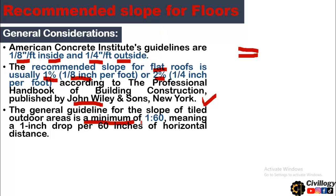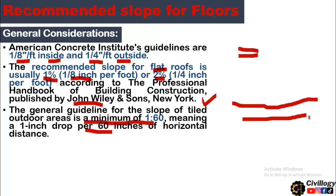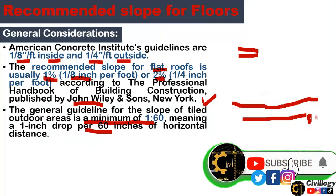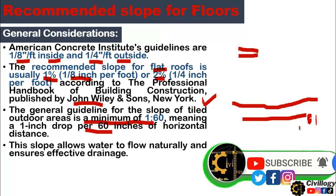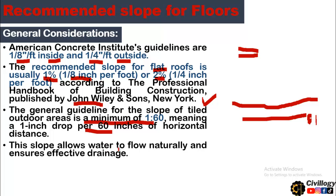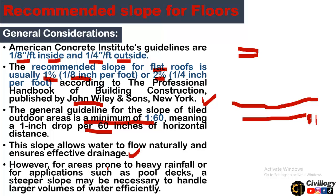A ratio of 1:60 means a 1-inch drop per 60 inches — that is, if you travel 60 inches in a straight line, you must provide a fall of 1 inch. This 1:60 slope allows water to flow naturally and ensures effective drainage. However, for areas prone to heavy rainfall or for applications such as pool decks, a steeper slope may be necessary to handle large volumes of water efficiently.